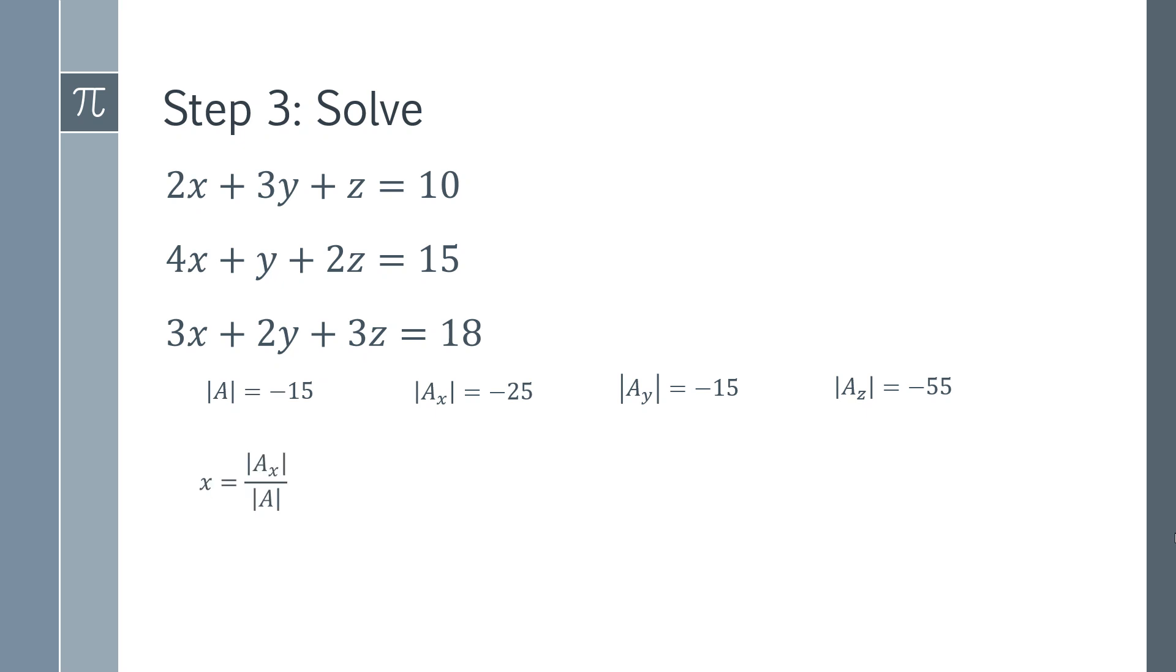So the x solution is going to be the determinant of our Ax matrix divided by the determinant of A. We can substitute the values in and then evaluate it. We get a simple number.